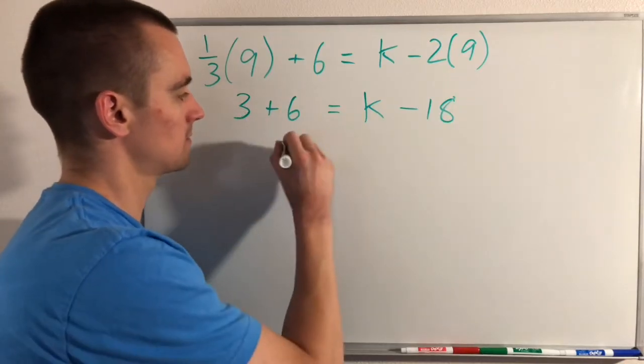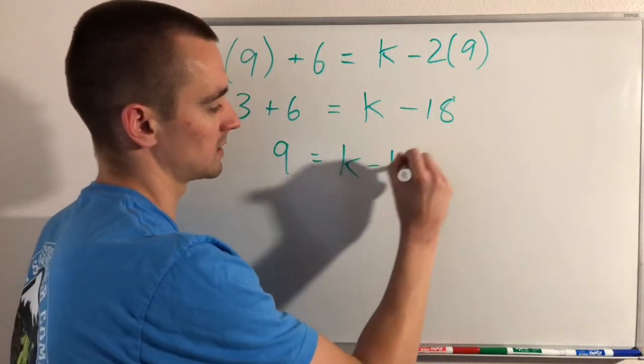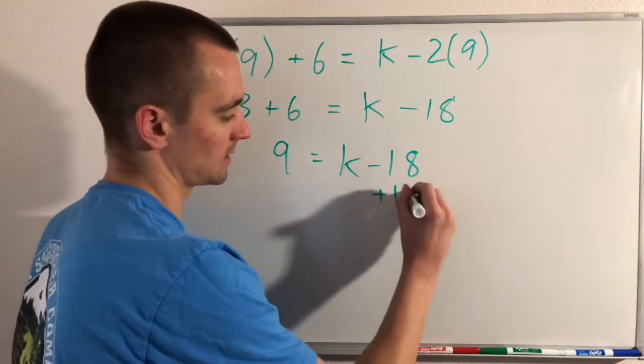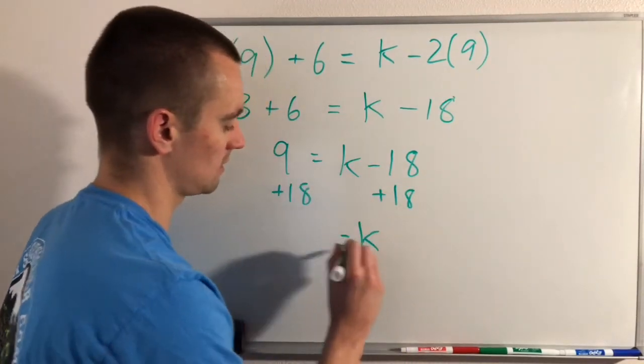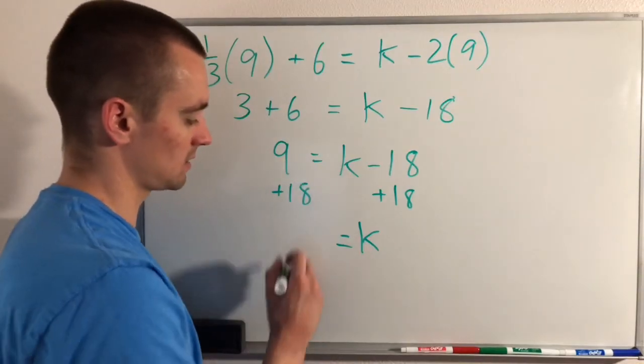3 plus 6 is 9 equals k minus 18. We can add 18 to both sides, and that gives us k equals 9 plus 18, which is 27.